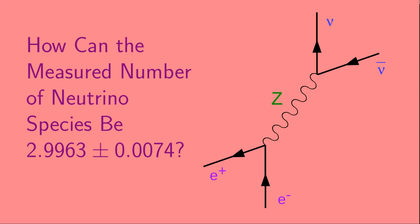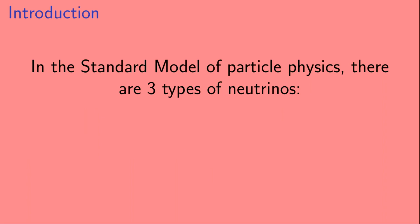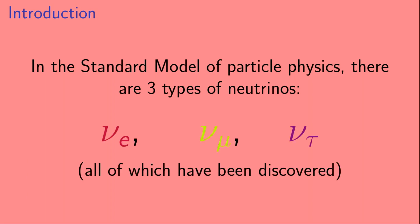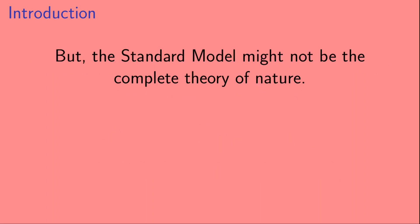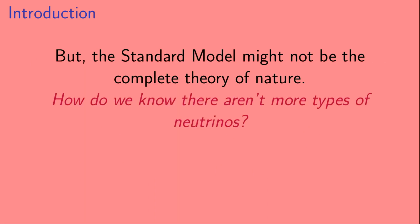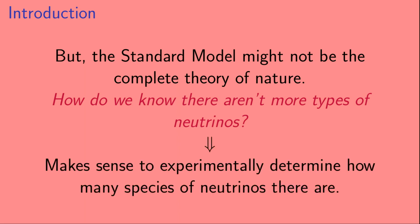Welcome to this video on how the measured number of neutrino species can be 2.9963 plus or minus 0.0074. In the standard model of particle physics, there are three types of neutrinos: the electron neutrino, the muon neutrino, and the tau neutrino, and all three have been discovered. However, the standard model might not be a complete theory of nature. So how do we know there aren't more types of neutrinos? It makes sense to experimentally determine how many species of neutrinos there actually are.